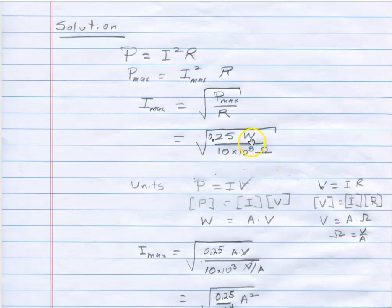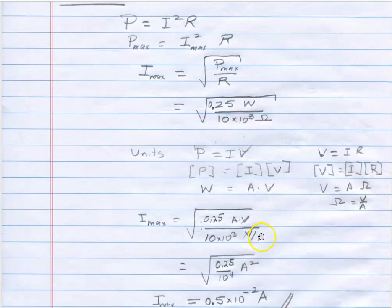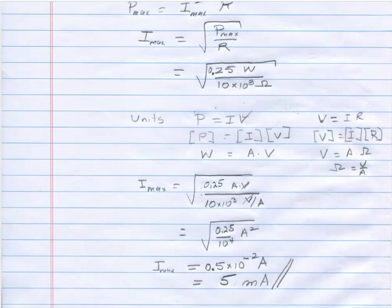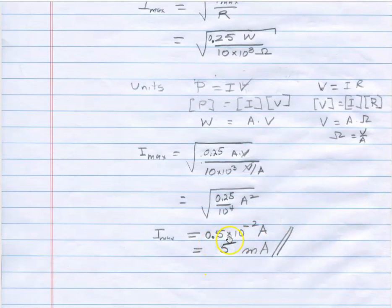So I replace both of those. The watts up here I replace it by ampere times a volt and the ohm I replace by a volt per amp. The volts cancel. The amp comes up on top and I get ampere squared and then when I square root everything, well when I did it I got 0.5 times 10 to the minus 2.